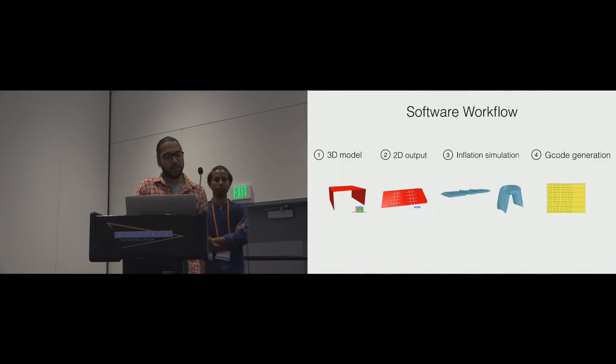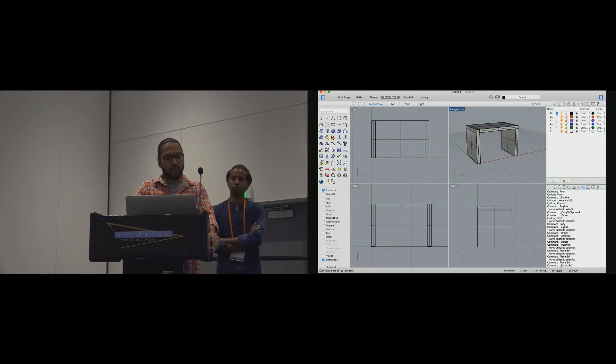Our software takes a 3D model as input from the user, decomposes it to 2D output, simulates the inflation, and generates g-code for the machine. We'll go through all of these steps in detail now. The user actually makes or imports a solid model in Rhino. This is the screen capture of our grasshopper extension that we built for the users.